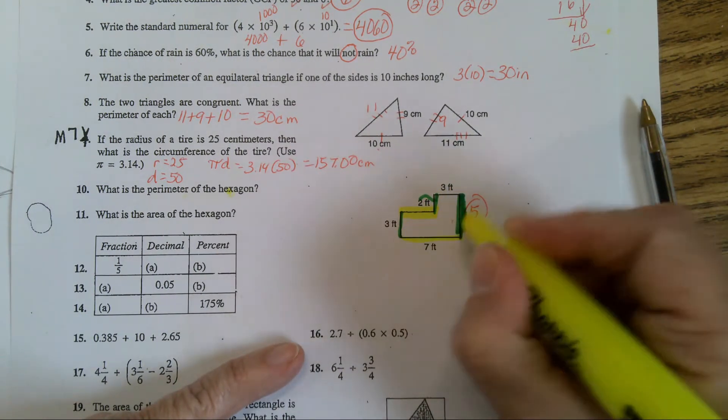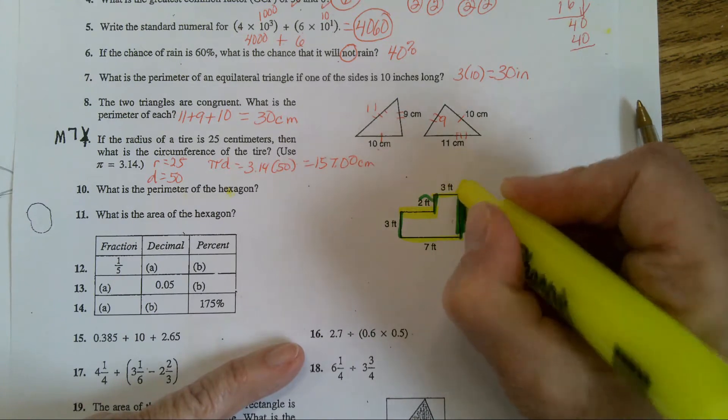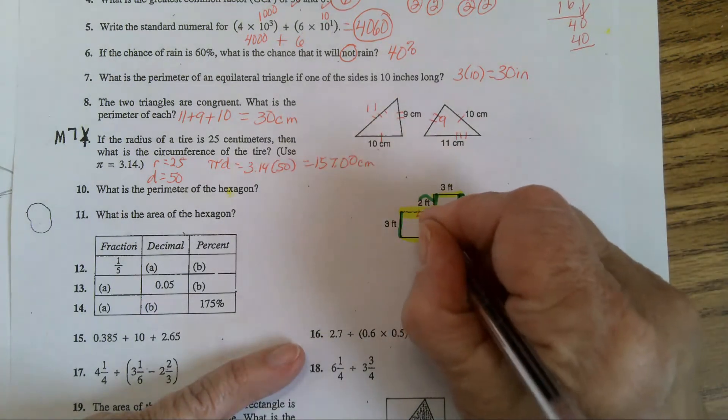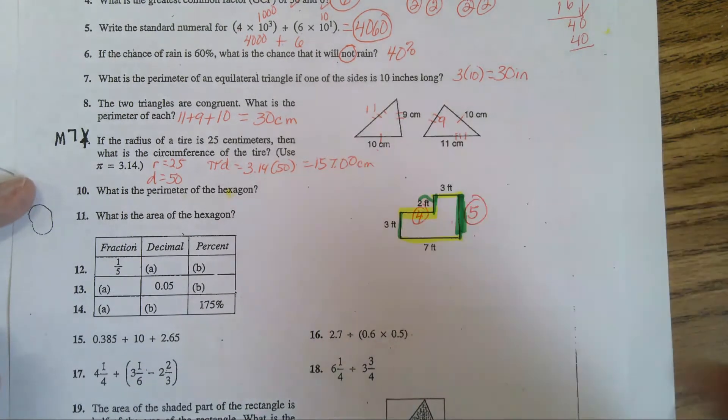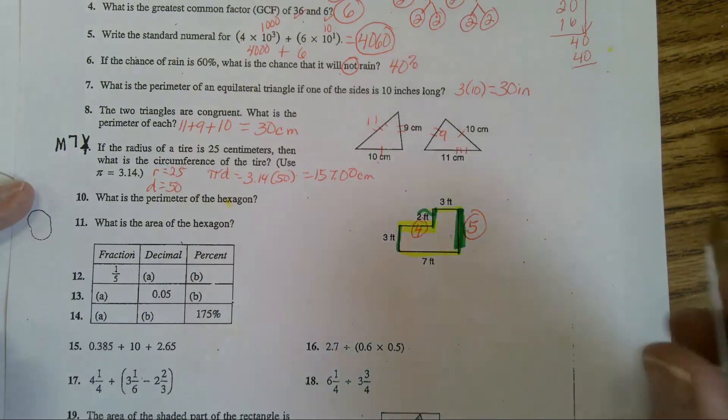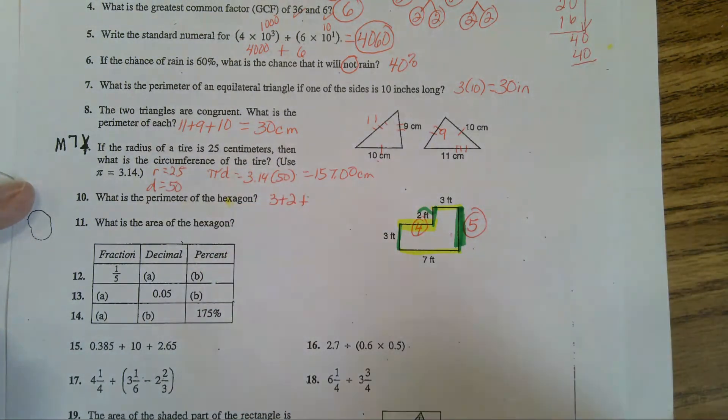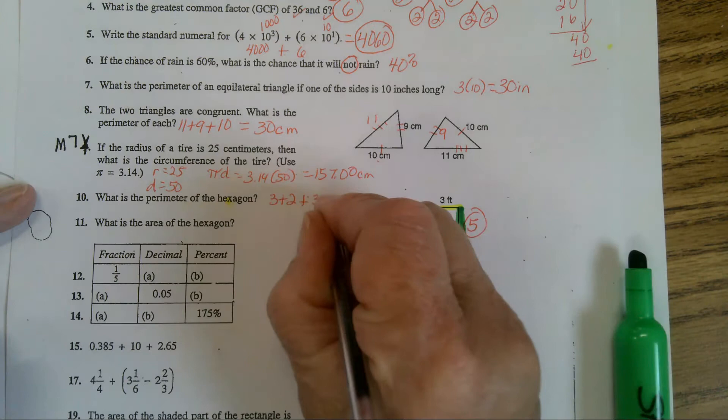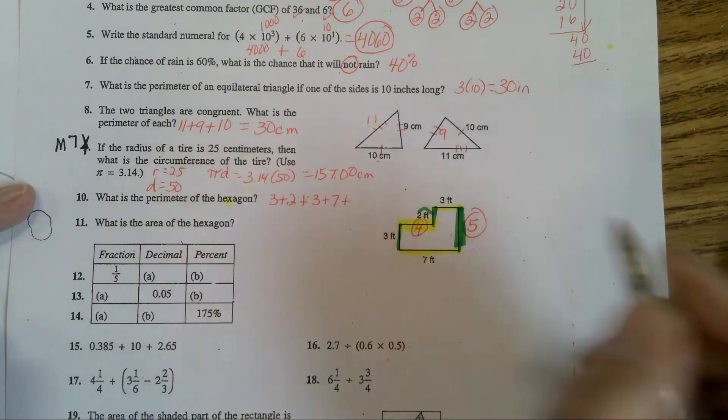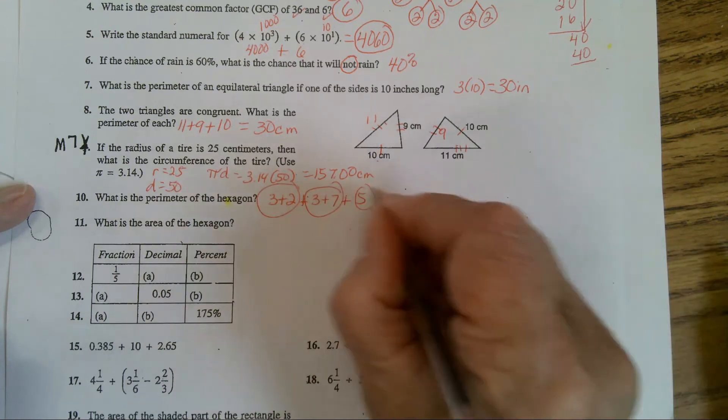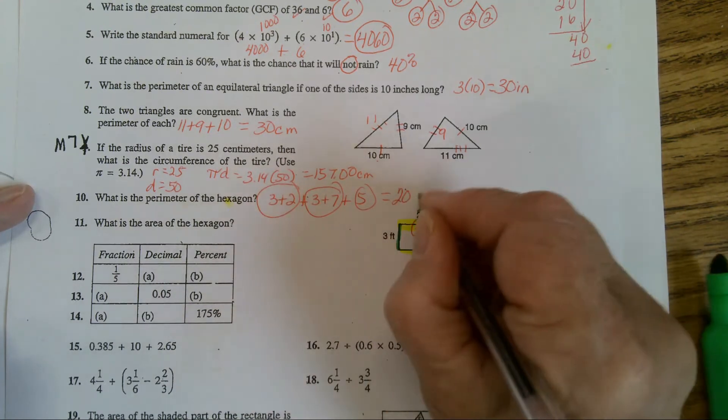And on this one, 7 is the full length. What's 7 minus 3? So this mystery side is 4. So for the perimeter, you have 3 plus 2 plus 3 plus 7, that's a 10, plus 5. So 10, 5, and 5, the answer is going to be 20 feet.